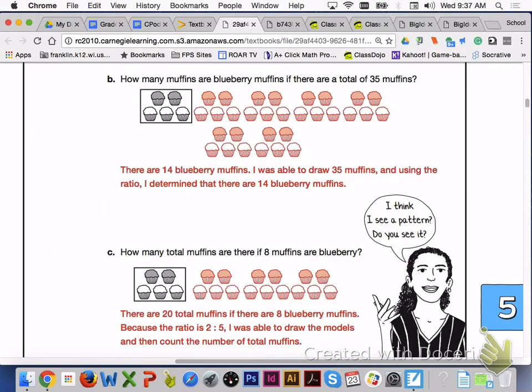For letter B, if there are 35 total muffins, this is what your model should look like, and you should be able to determine that there are 14 blueberry muffins.